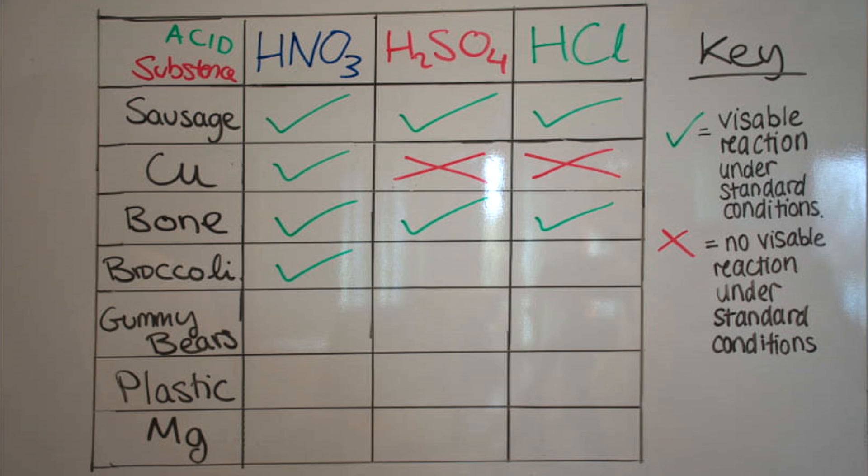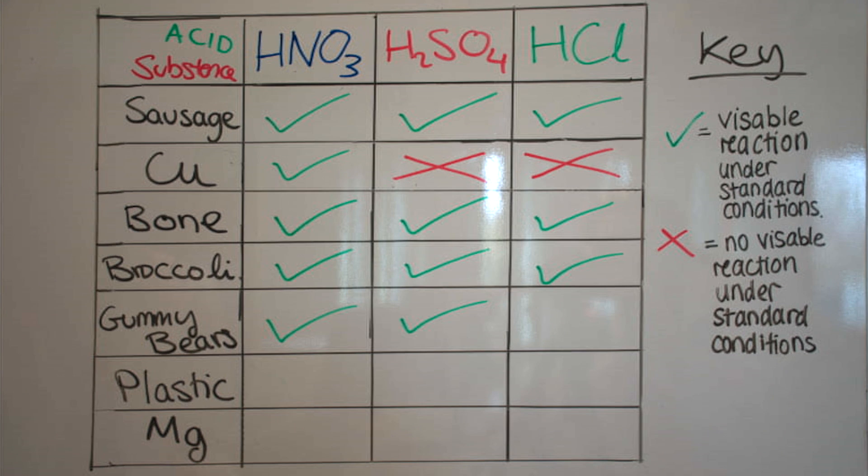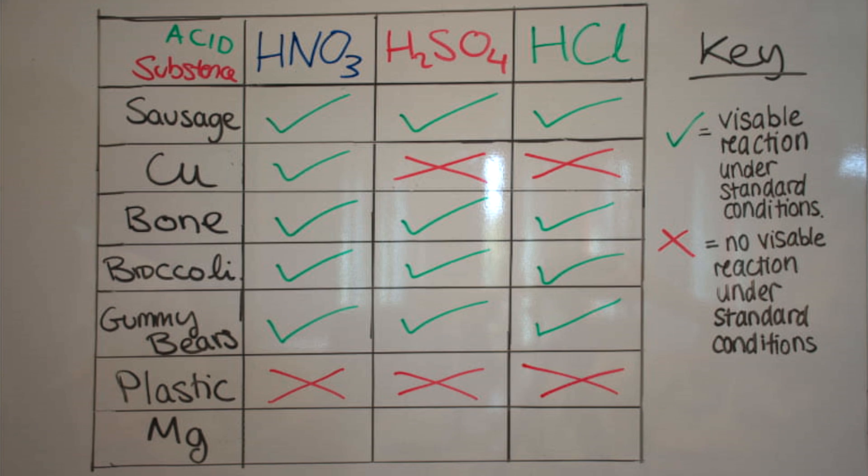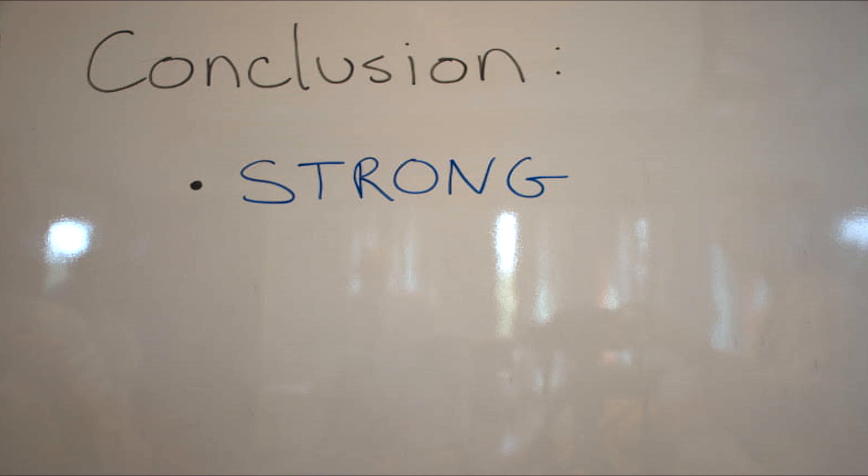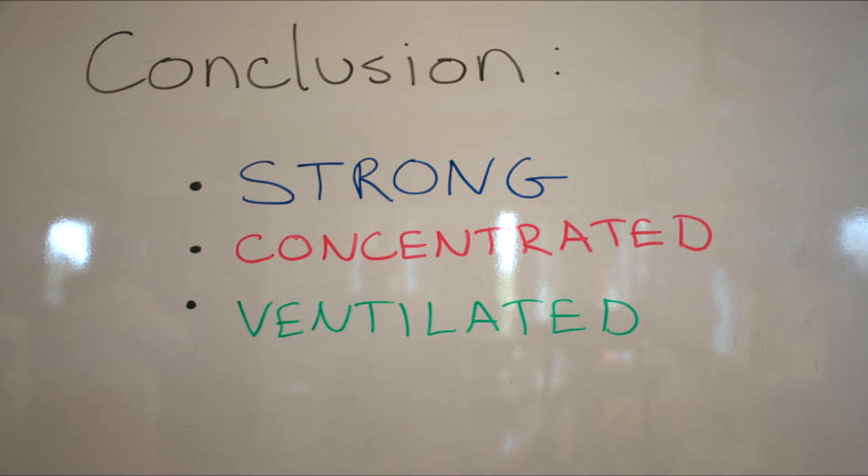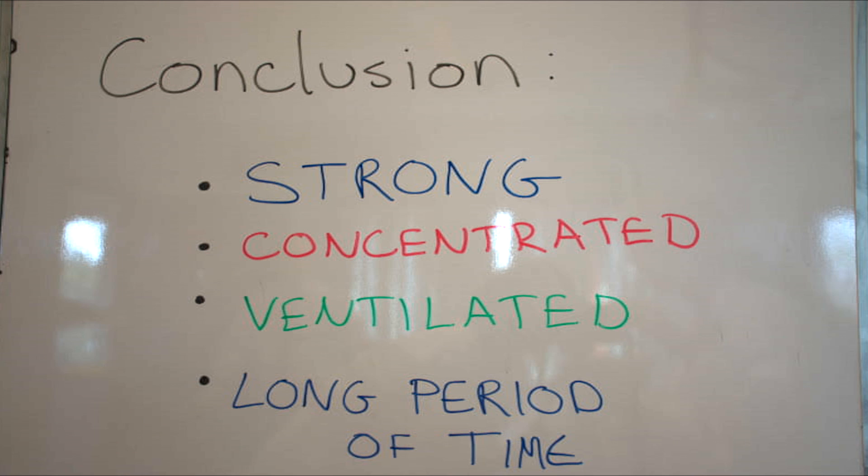Sulfuric acid would be used to dissolve organic materials and nitric for metals. From these results, to dissolve a body you need to leave it in a mixture of acids for a very long time, at least probably a week, somewhere isolated and ventilated. We used a fume cupboard for our experiment.